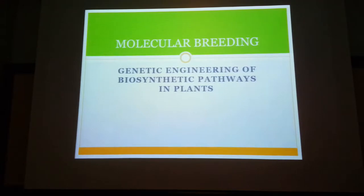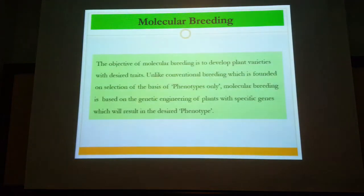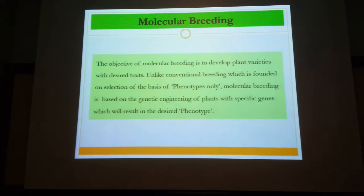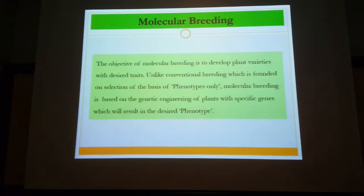There is a procedure involved in molecular breeding. The first thing you need to do is identify the plant and the associated compound. From the compound, you can then work out the biosynthetic pathway. Many compounds of medicinal or pharmaceutical importance are known, and their associated pathways are known through biochemical analysis.